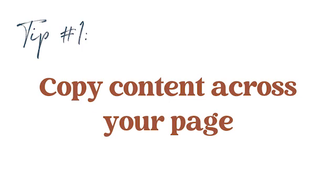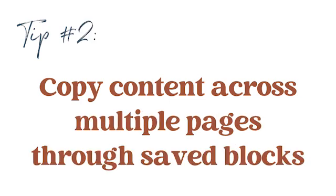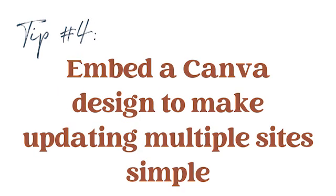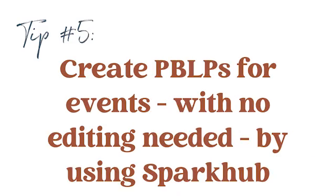To recap, save time: you can duplicate content across a single page to avoid having to format multiple times; save blocks for use across multiple pages to avoid having to recreate them; add images using the image URL trick so you don't have to download and upload images to and from your device; use an embedded Canva design so you can make updates in just one spot that will result in updated info across multiple sites; and use Spark Hub so you can create signup pages and event pages with all the info they need with no actual editing required. What did you think of this video? Is there a tip that you plan to try? I'd love to hear it in the comments, and I'll see you next time.